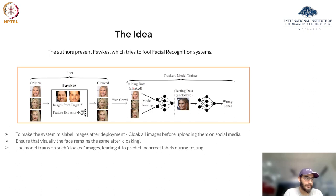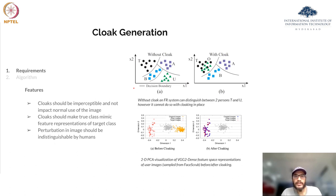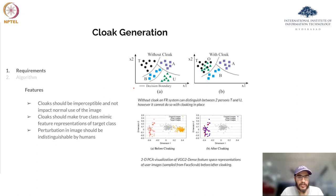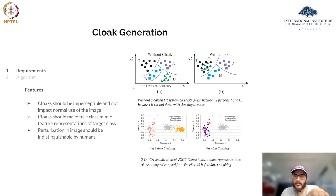Let us understand how these cloaks are generated and what the requirements are. First, cloaks should be imperceptible and not impact normal usage of the image. Second, cloaks should make the user class mimic the feature representation of a target class. Third, perturbations should be indistinguishable by humans. The images show that without cloaking, the feature extractor can distinguish between two classes U and T, but with cloaking, the model is confused from class U to T — the decision boundaries between class U and class T are now merged and the model is not able to distinguish between the two.